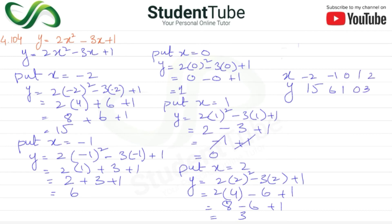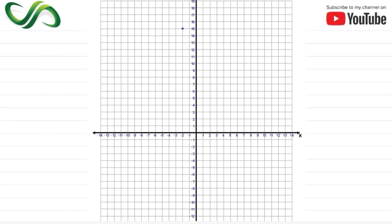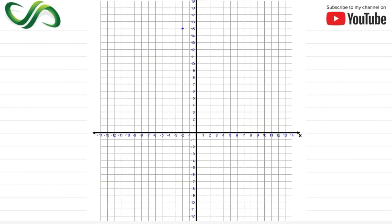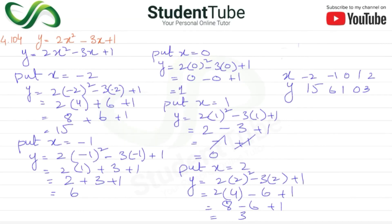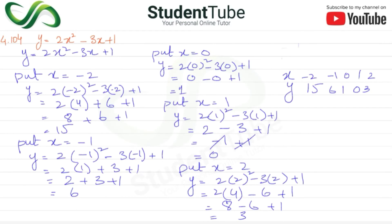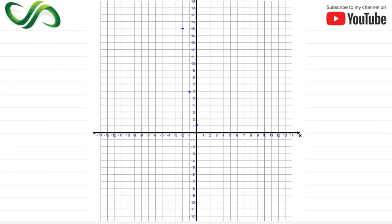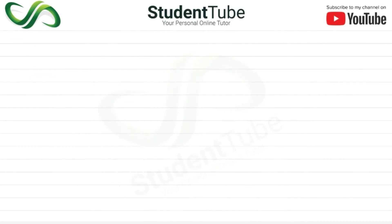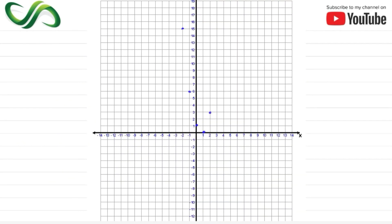Now using the graph: from x = -2, y = 15; x = -1, y = 6; x = 0, y = 1; x = 1, y = 0; x = 2, y = 3. These points are plotted on the graph.